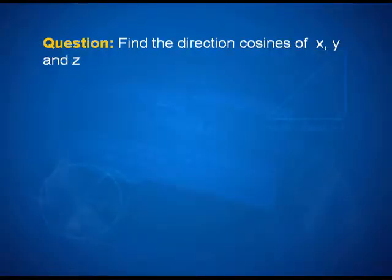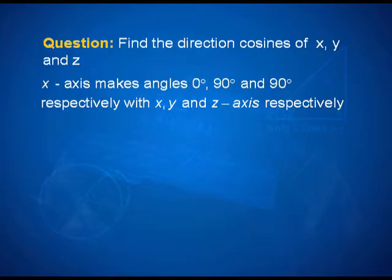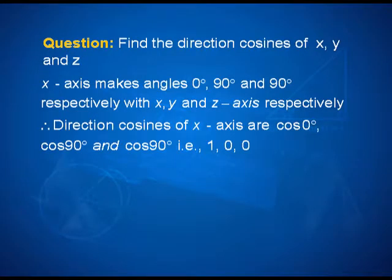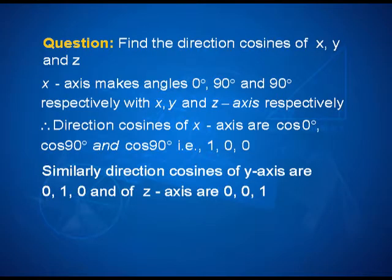I think now you are ready to try your hand at a very simple exercise. The question says that find the direction cosines of x, y and z axis. Now, we know very well that x axis makes 0 degree, 90 degree and 90 degree angle respectively with the 3 axes. And therefore, the direction cosines of x axis will be cos of 0 degree, cos of 90 degree and cos of 90 degree. That is 1, 0 and 0 are the direction cosines of x axis. Similarly, you can talk about the direction cosines of y axis which are 0, 1 and 0 and z axis 0, 0 and 1.